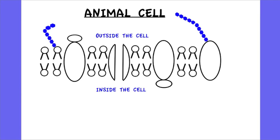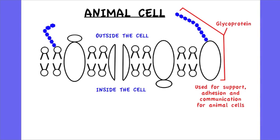The intricate structure of the cell membrane is covered in another video, but I want to have a look at one part in particular, and that is the glycoprotein. And this is where you have the protein attached to a carbohydrate. The function of this is that it's used for support and adhesion and communication for animal cells.